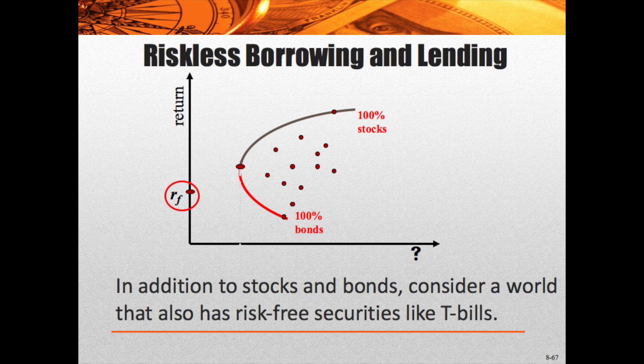When you look at the risk-free rate, it sits absolutely on the vertical axis — there is no risk — so we place it all the way over on the vertical axis. Then we have a choice between it and being out in the ocean with the volatile assets.